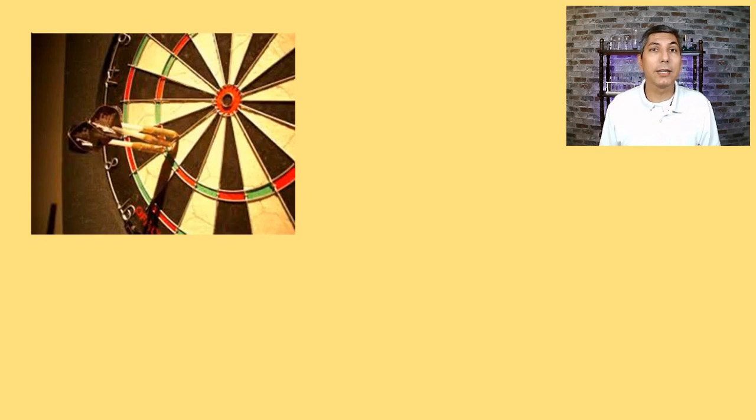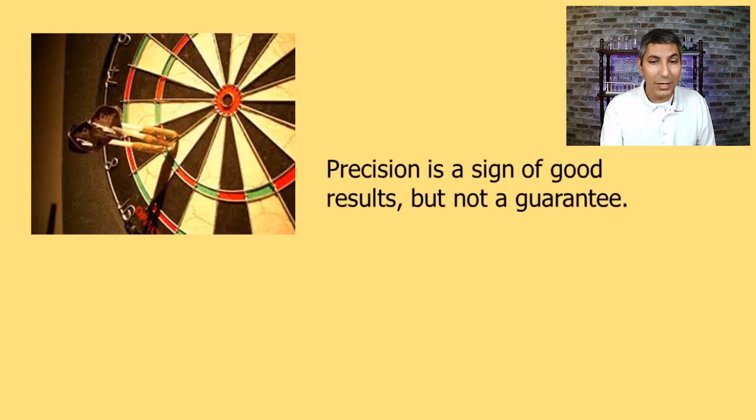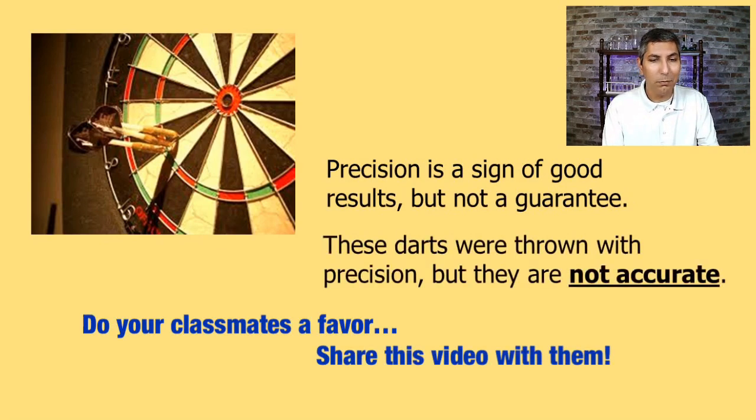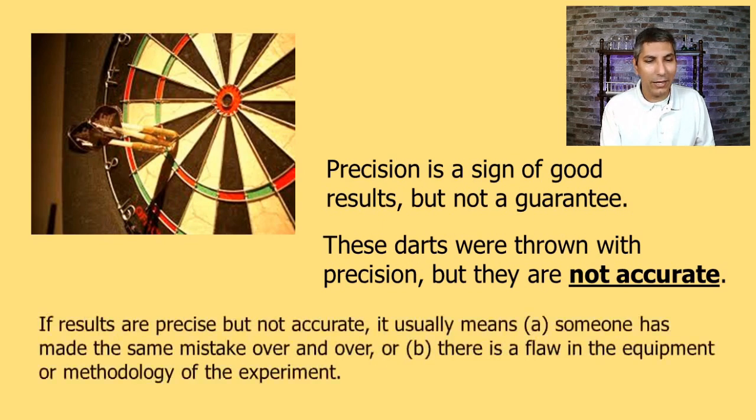For example, take a look at this dartboard. Here we have three darts. They're all very close to each other. So we could say that these results are certainly very precise but they're not on the bullseye, and so they're not accurate.